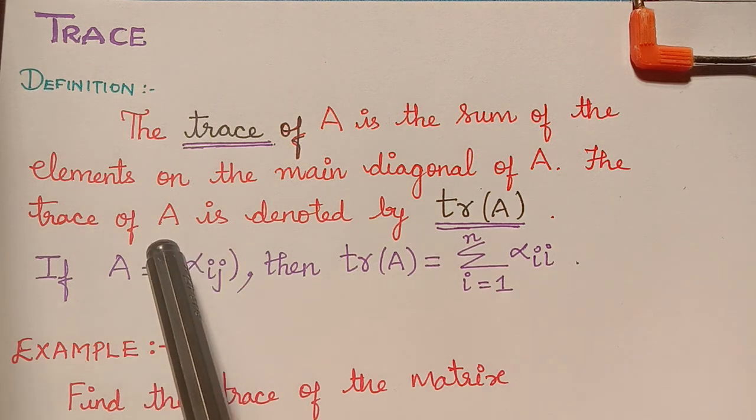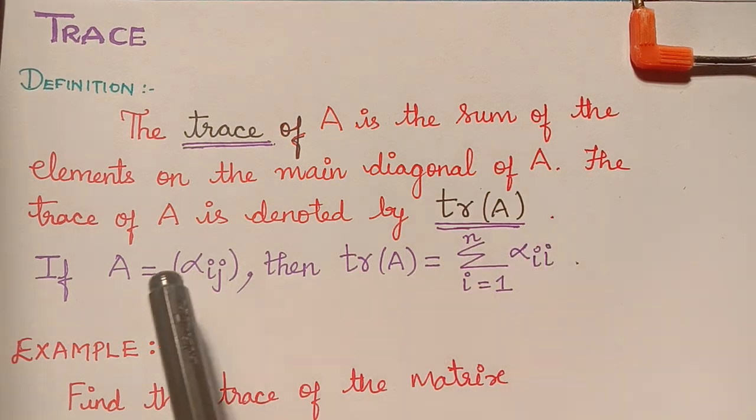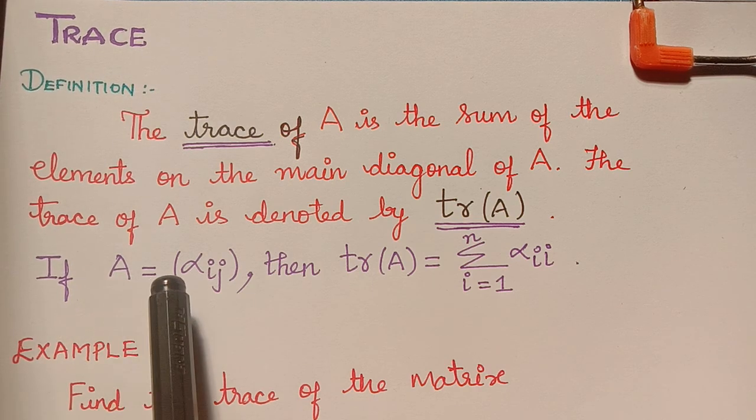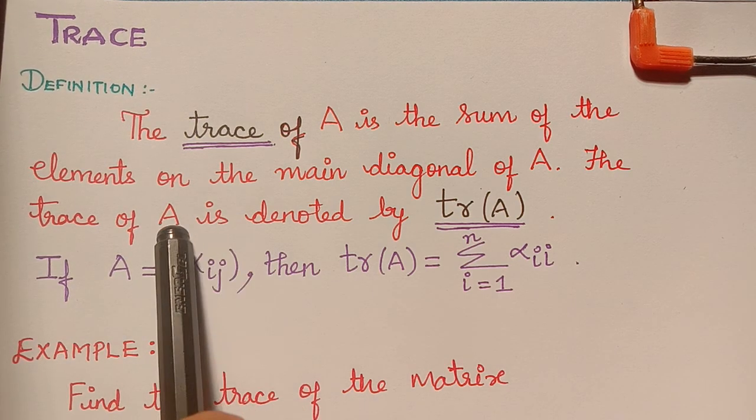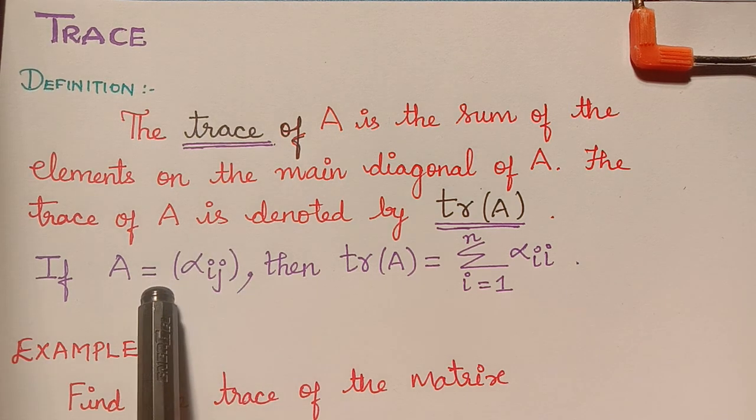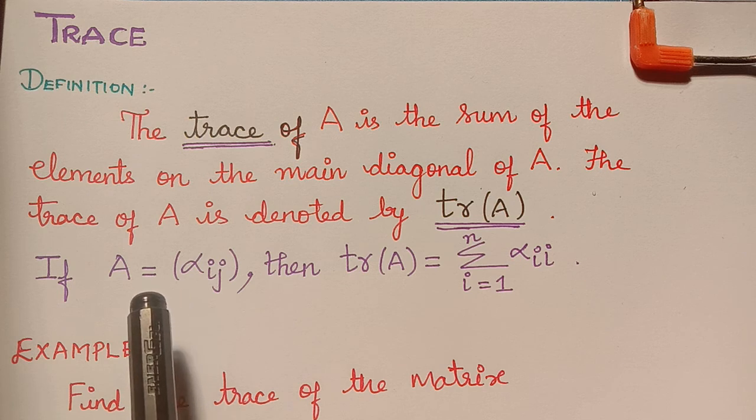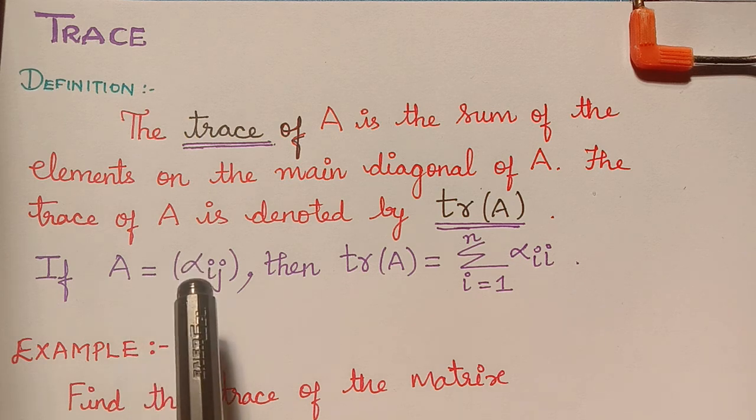The trace of a matrix A is denoted by tr(A). If capital A is a matrix with elements alpha_ij, the first element will be alpha_11, the second element will be alpha_12, and likewise.